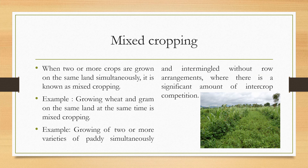Coming to mixed cropping, this is a cropping system where two or more crops are grown on the same land simultaneously. Some examples include growing wheat and gram on the same land at the same time. Also, growing two or more varieties of paddy which intermingle without row arrangements also comes under the mixed cropping system.